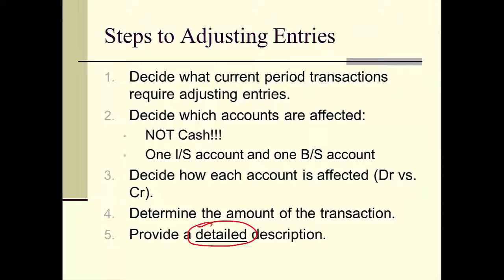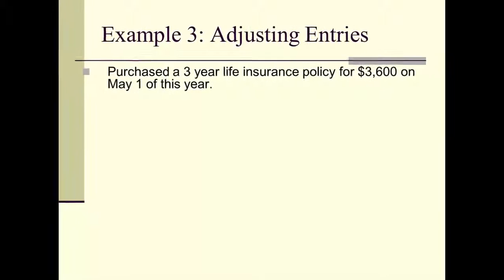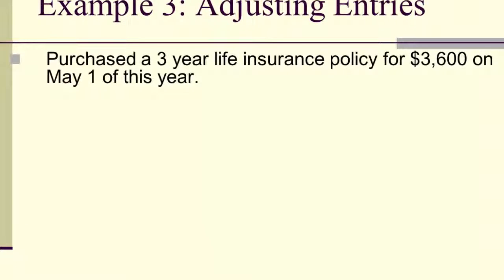Let's do an example. We purchased a three-year life insurance policy, paid $3,600 on May 1st of the current year. We want to make the necessary adjusting entry on December 31st. Step one: do we need to make an adjusting entry? We probably recorded the payment when we sent out a check at the beginning of May. Now that we're in December, we've used up some of that insurance we already paid for, so we have to record that use. Yes, we need to make a journal entry.